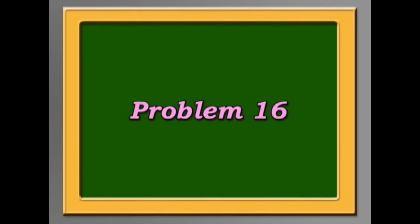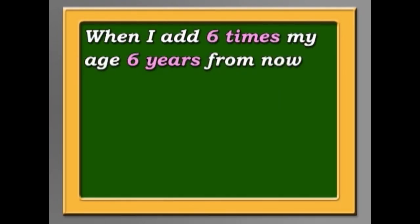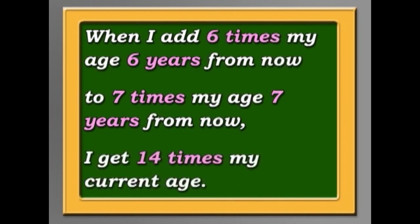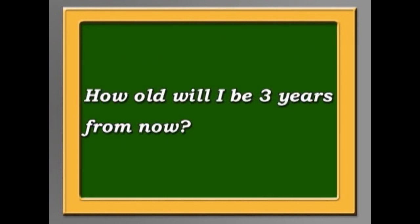Problem 16. When I add six times my age six years from now to seven times my age seven years from now, I get 14 times my current age. How old will I be three years from now?